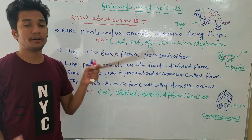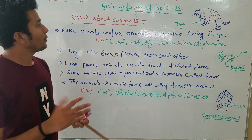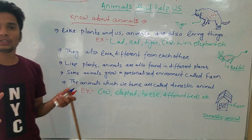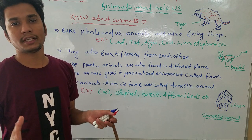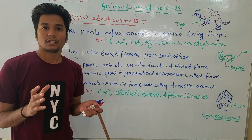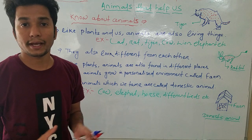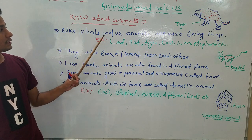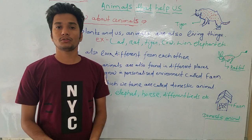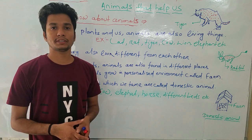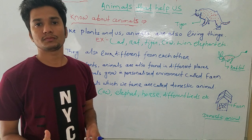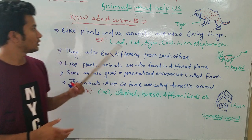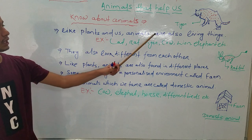Before discussing how animals help us in day-to-day life, let's learn some facts about animals. When we look outside we see different kinds of plants. Similarly, there are different types of animals in our environment. Like plants, animals are also living things. We are living things — we can move from one place to another, we can eat, we can grow. Exactly like that, animals are also living things.